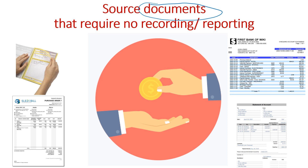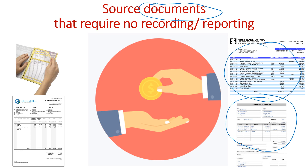That doesn't always occur with some of the documents that feature in the process. For instance, the statement of account doesn't require any recording or reporting because it basically summarizes all of the transactions for an accounts receivable or accounts payable for a period of time. It enables a cross-checking mechanism, so we don't double record any transactions — they've already been recorded as credit sales, credit purchases, cash receipts, or cash payments. Same with the bank statement — it's simply a summary of past events, so we're not going to double record any transactions that feature in our bank statement.